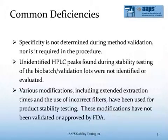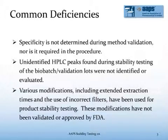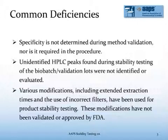The second bullet shows that unidentified HPLC peaks found during stability testing of the bio-batch validation lots were not identified nor evaluated. Unidentified HPLC peaks have always been among the biggest issues — what levels do we have to monitor, what levels require qualification or identification of those materials? Impurity is a critical quality attribute of the product, so a lot of attention has been focused in this area.